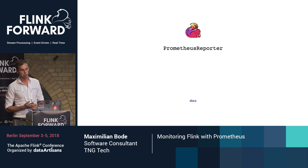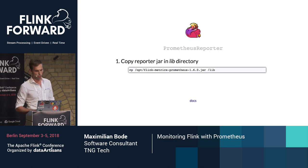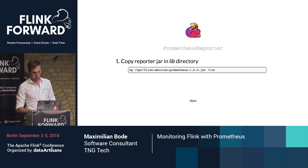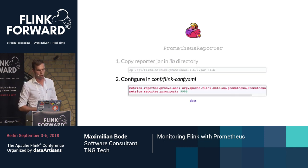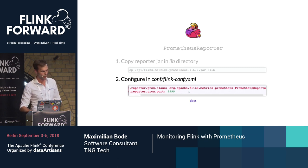To do this, it's really easy. You want to make the Java archive available to your classpath — if you're using the latest Flink version, it's just this one command. Then you need to configure it in your flink-conf: tell it which class this reporter uses, and then you can also tell it which port to use.